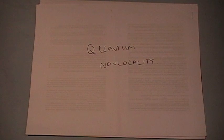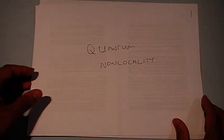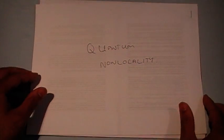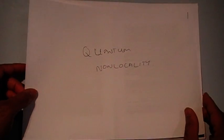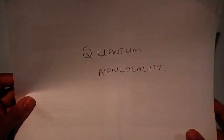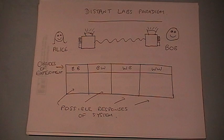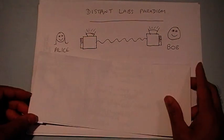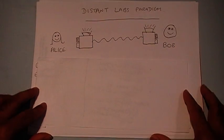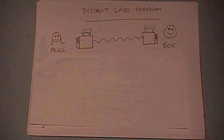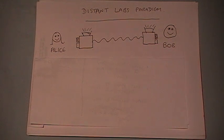In this clip, I'm going to tell you about one of the most fascinating features of quantum theory, which goes by the name of quantum non-locality. To understand what quantum non-locality is all about, we need to think about a particular setting in which two experimenters might find themselves.